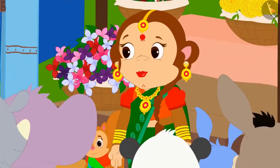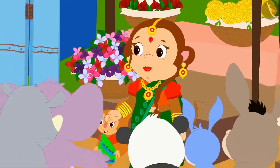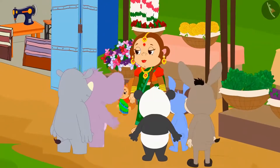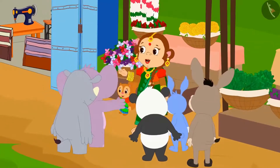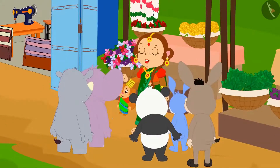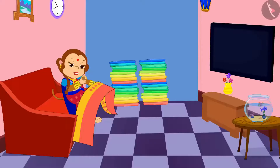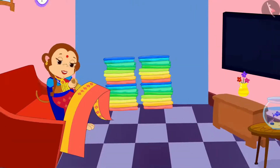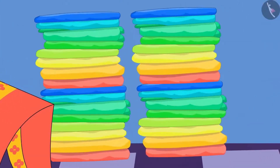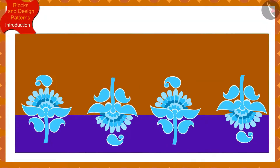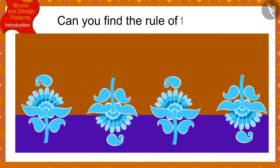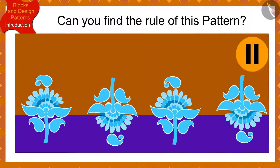Then what was to happen? Banno got orders to make a lot of saris the next day. Children, if Banno has made such a design on one of the saris, can you find the rule of this pattern? If you wish to, you may stop the video and think of the answer.